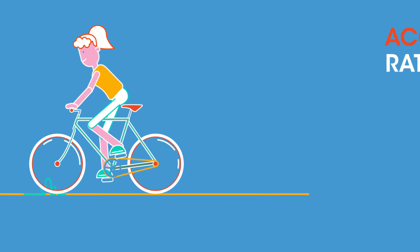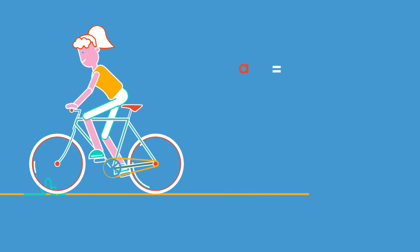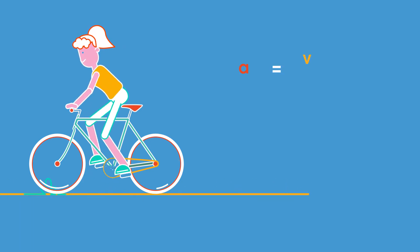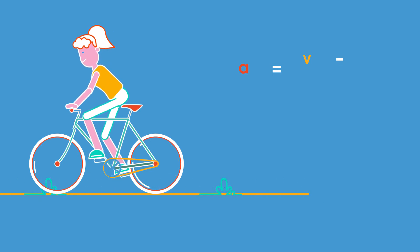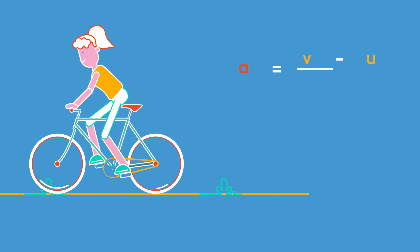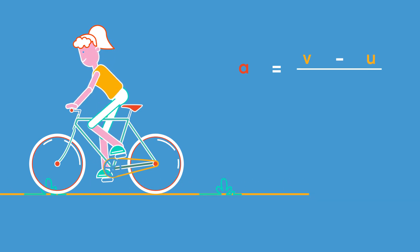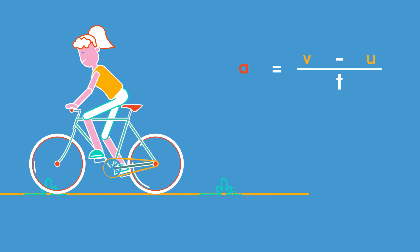It can be calculated using the formula: acceleration a equals final velocity v minus initial velocity u, divided by time taken t.